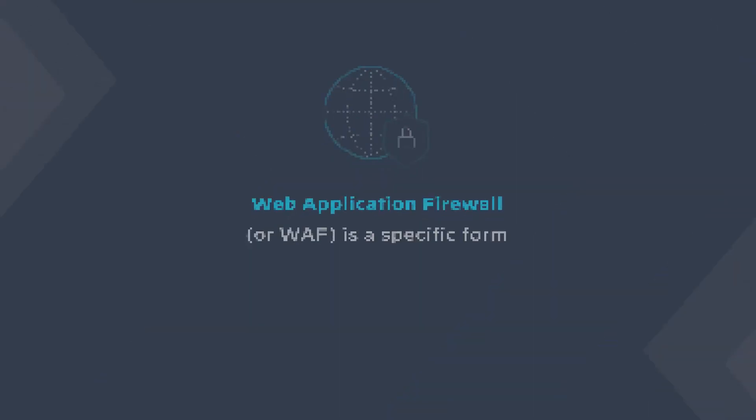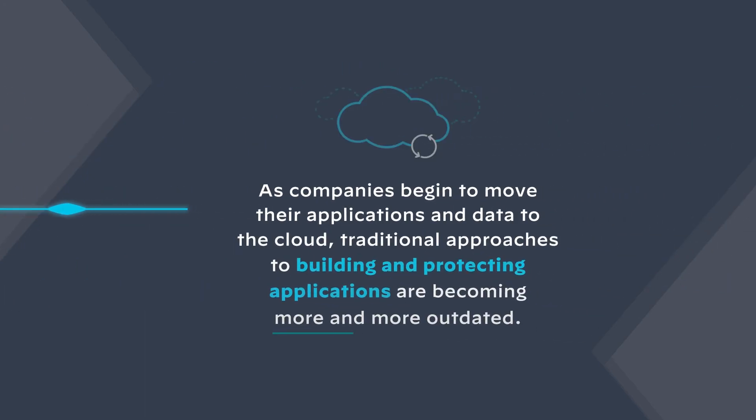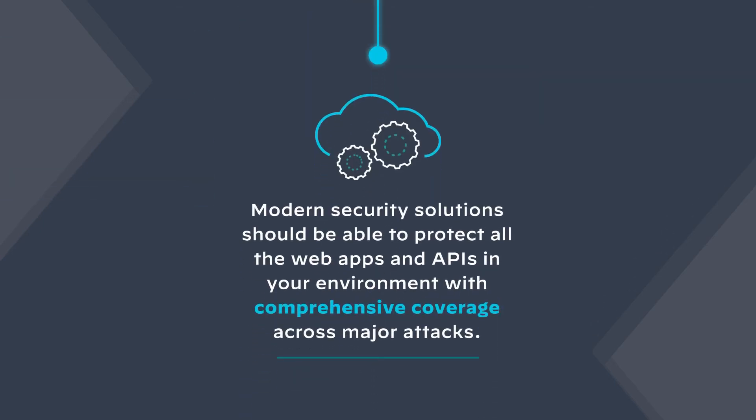Here's a quick recap of what we've learned: A WAF is a specific form of an application firewall that protects web applications from web-based attacks from the internet. As companies begin to move their applications and data to the cloud, traditional approaches to building and protecting applications are becoming more and more outdated. Modern security solutions should be able to protect your web apps and APIs in any cloud-native environment with comprehensive coverage across major attacks.